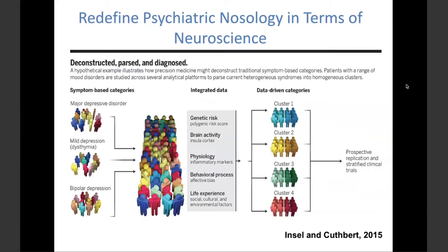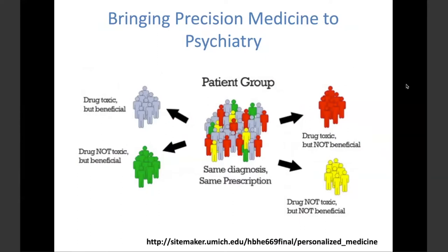Part of the problem is the over-reliance on DSM diagnoses - the nomenclature is not biologically based. Another part is everyone's preference to go after the one modality they care about most, as opposed to taking a mass collection of different measures at different units of analysis and then guiding your analyses and subtyping from there. And of course, the idea of precision medicine has spread throughout all of medicine.